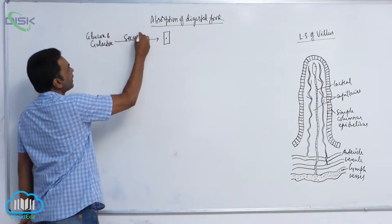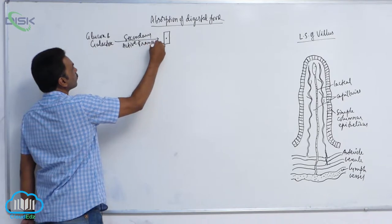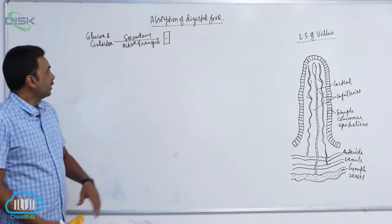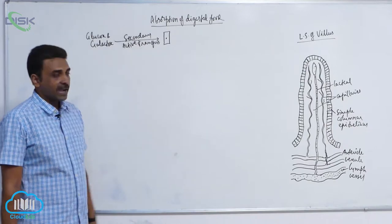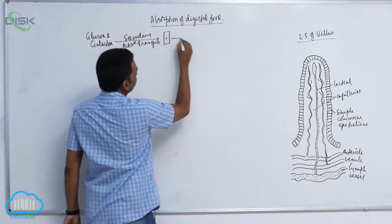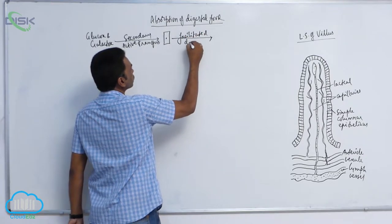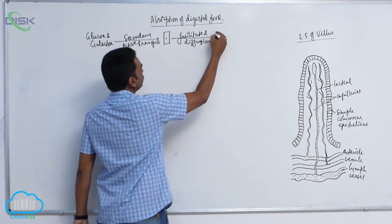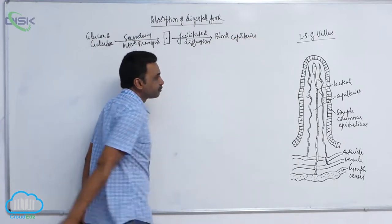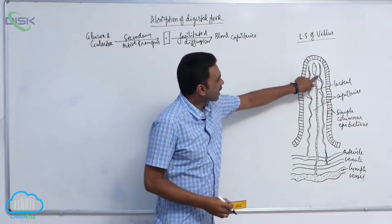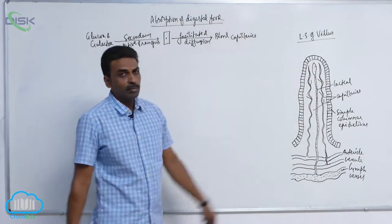Glucose and galactose enter from the lumen into the epithelial cell by secondary active transport, and from there they enter into blood capillaries by facilitated diffusion. These capillaries connect arterioles and venules — glucose and galactose enter directly into the blood capillaries.